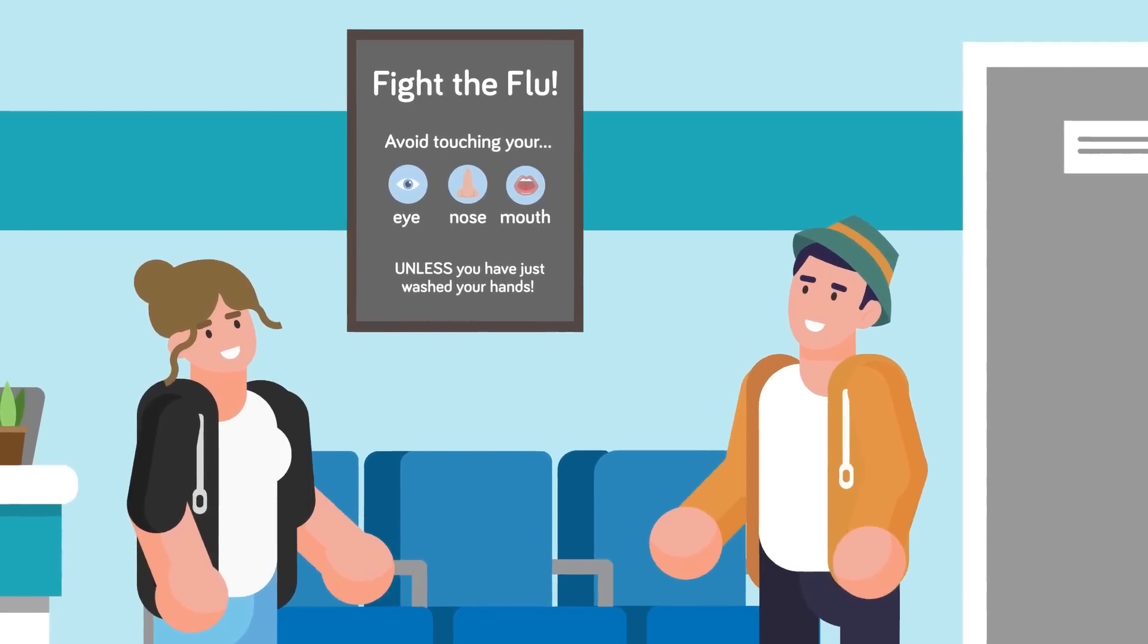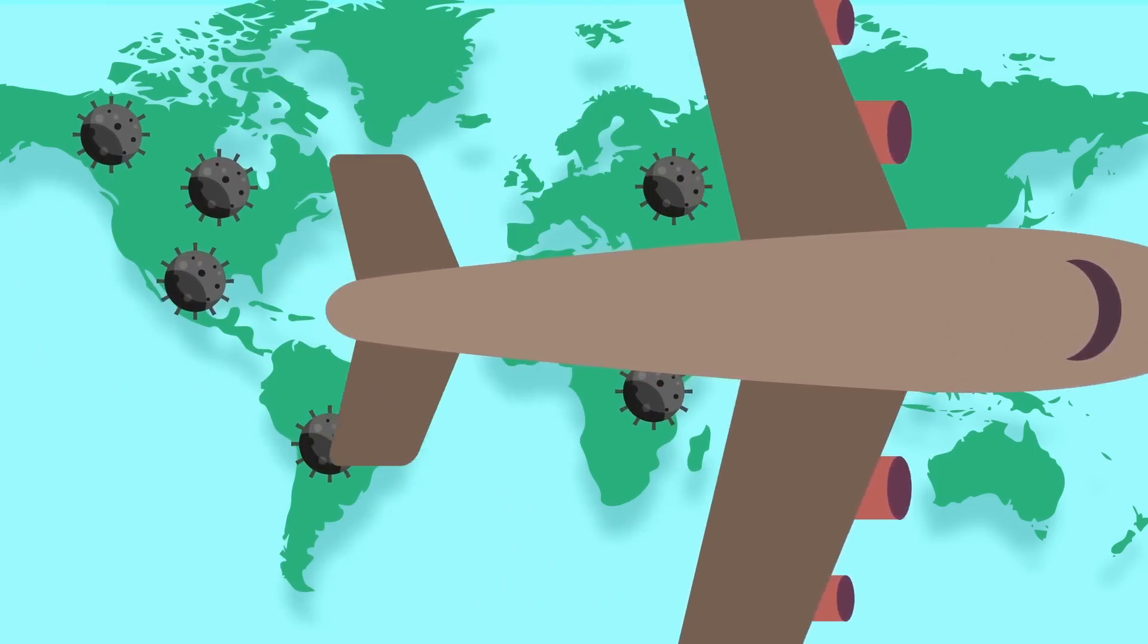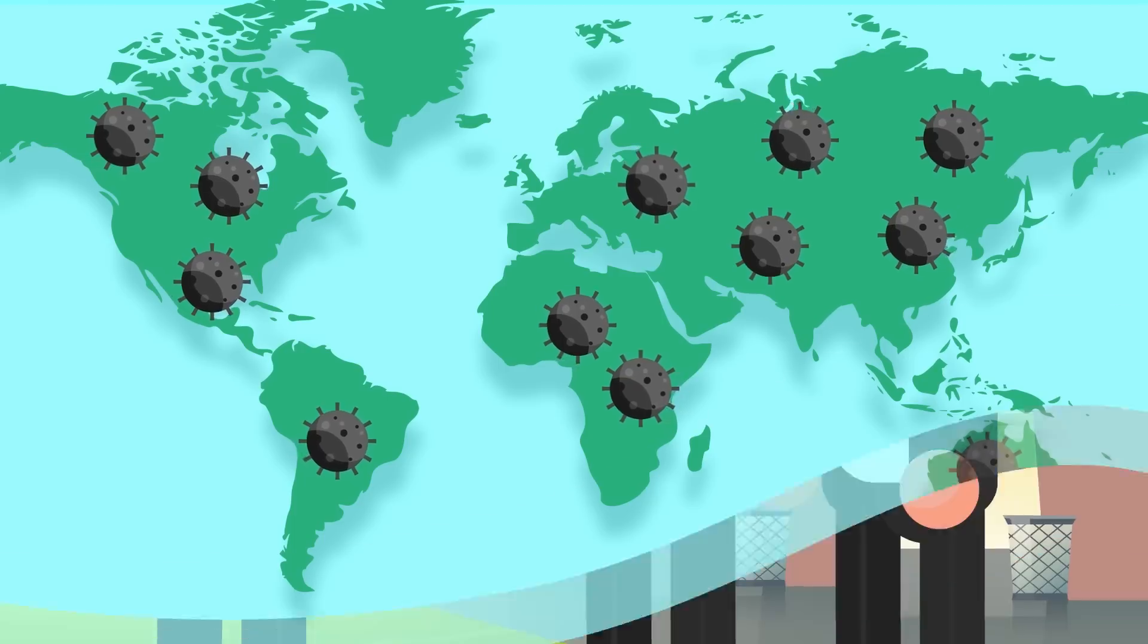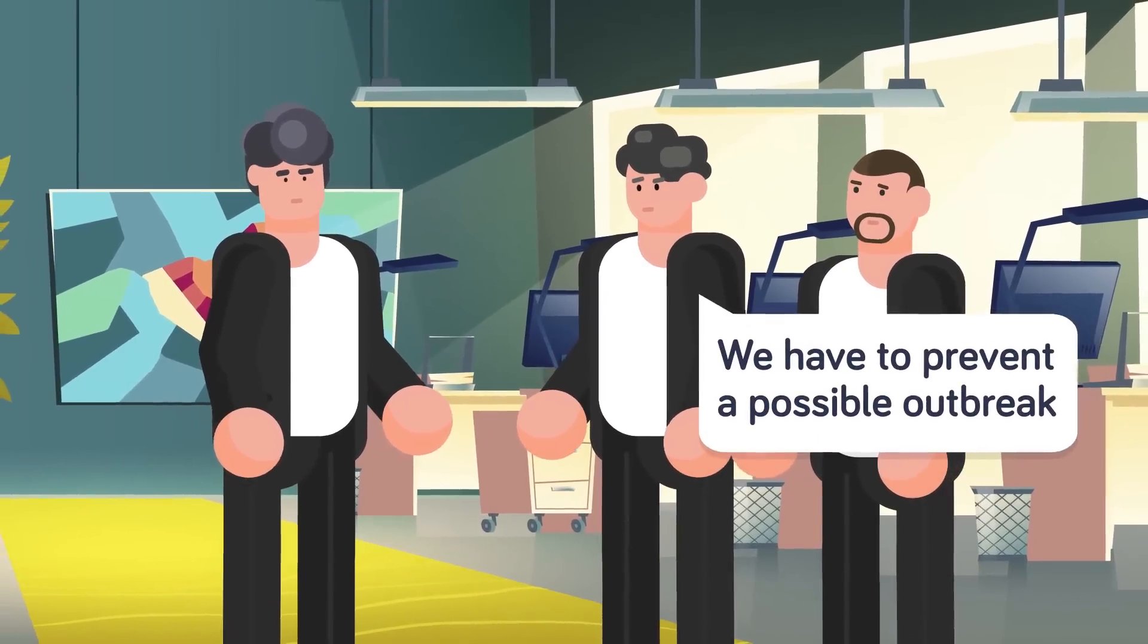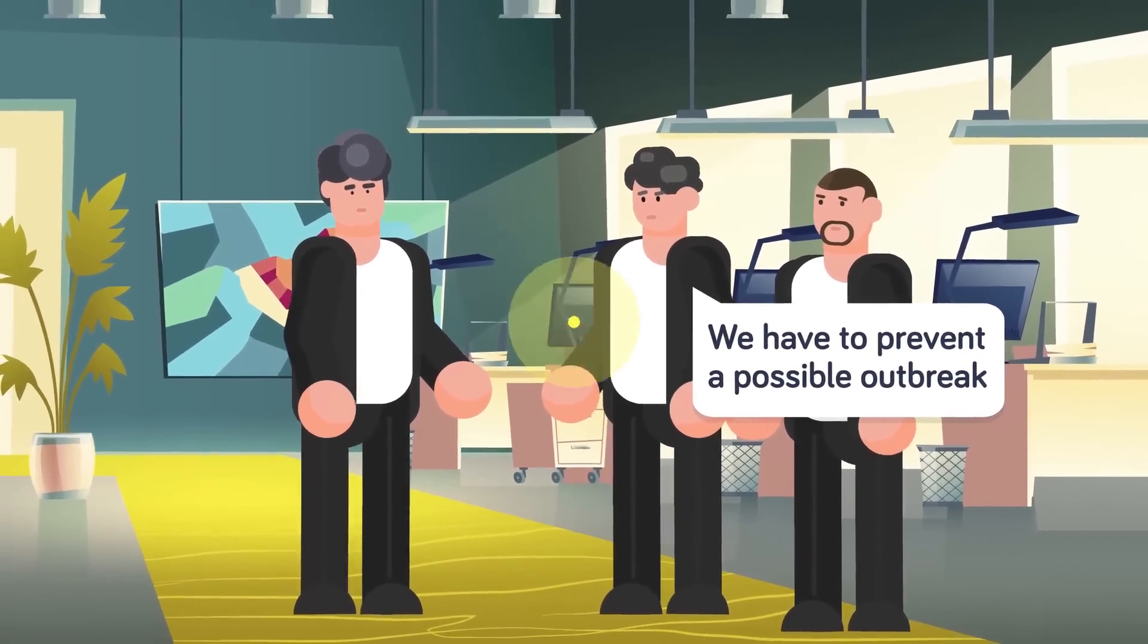And even with all these advances, a viral outbreak is still a major concern, especially since the world is more connected today than ever before. The precautions I just mentioned can help limit the spread of a virus, but stopping outbreaks before they start is a much more effective way to kill a virus.